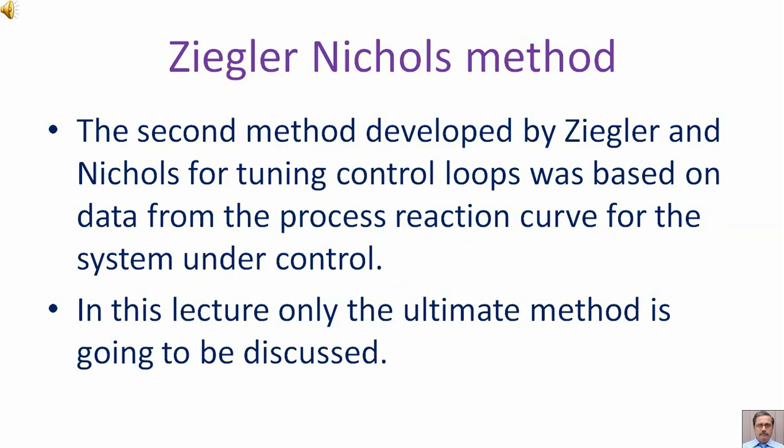The second method developed by Ziegler and Nichols for tuning control loops was based on data from the process-reaction curve for the system under control. In this lecture, only the ultimate method is going to be discussed.